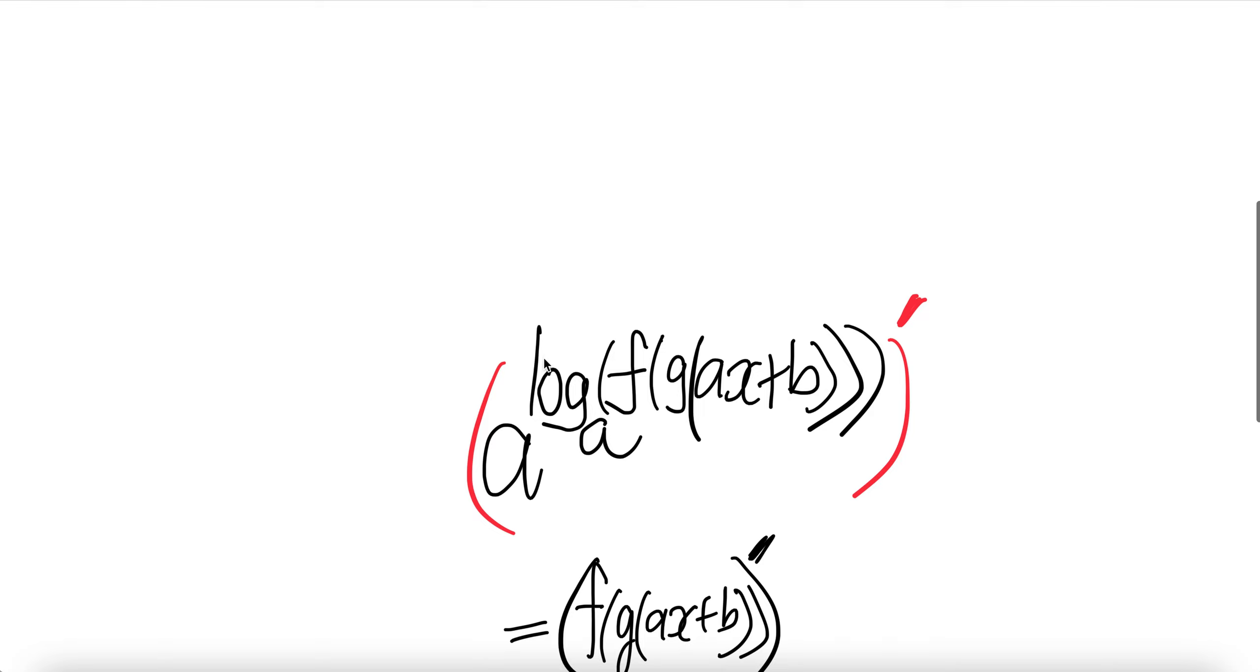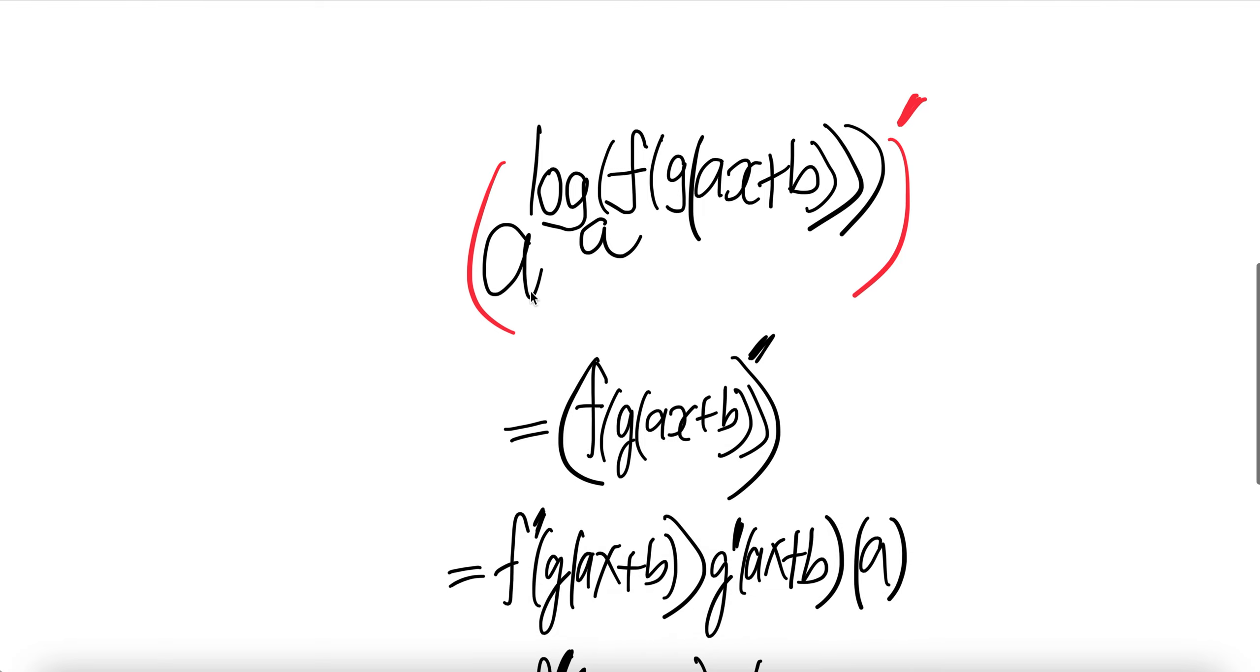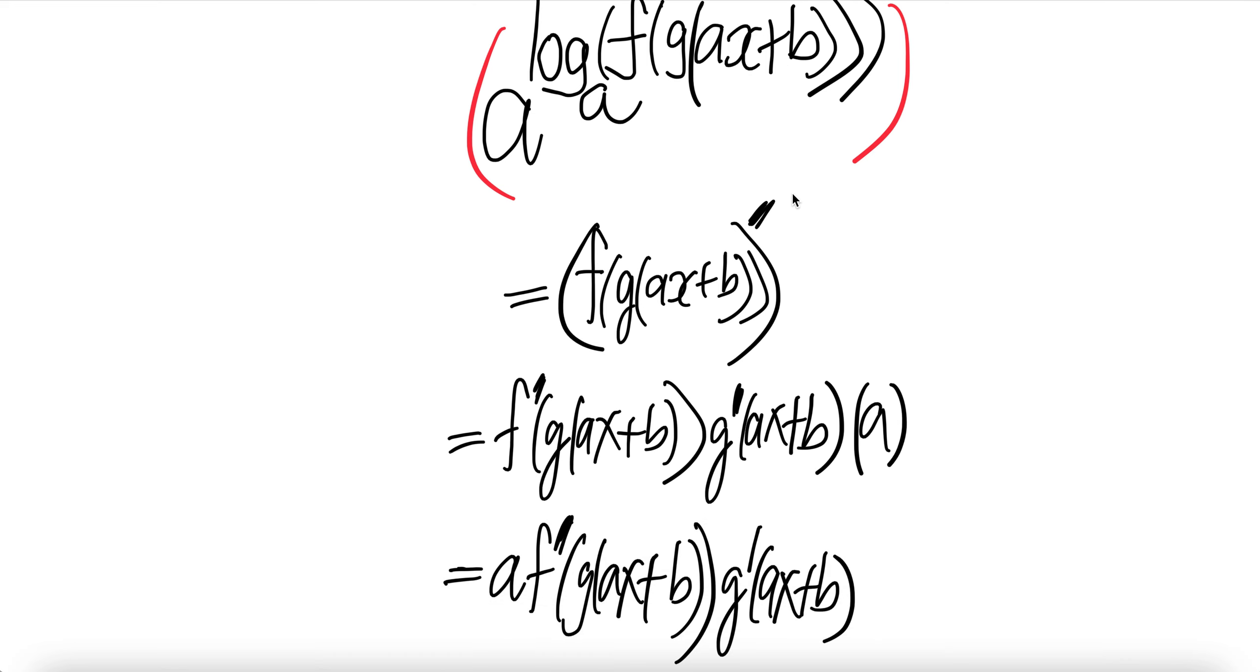Let's get the derivative of this. Notice that a to the power of log of something to the base a, you can cancel that off and then this piece drops down. So basically you want to find the derivative of f of g of ax plus b.